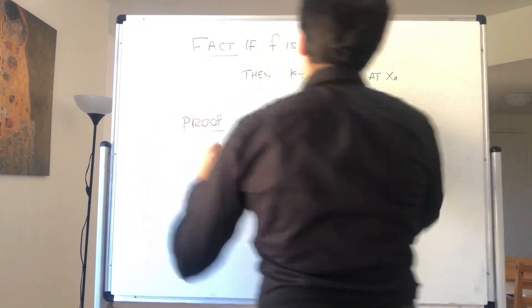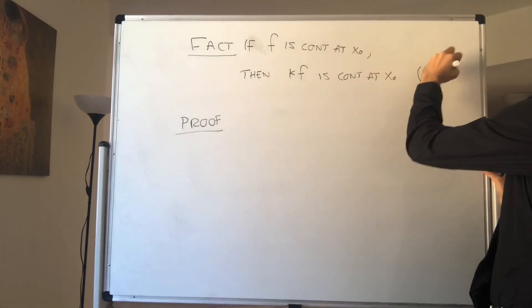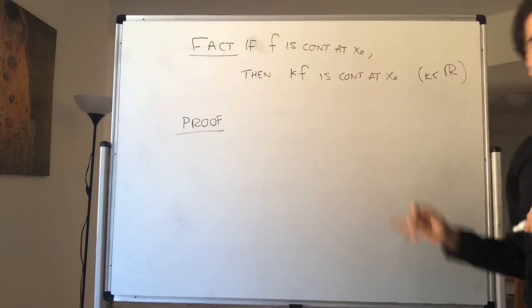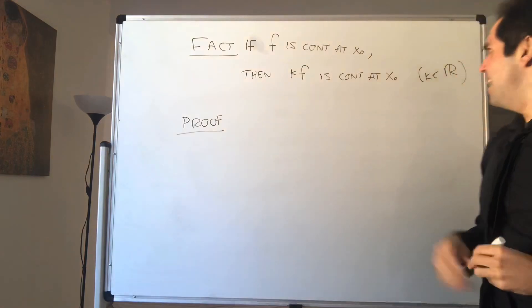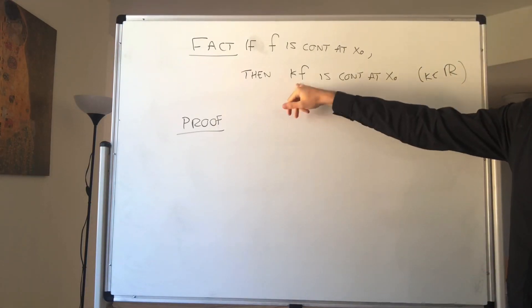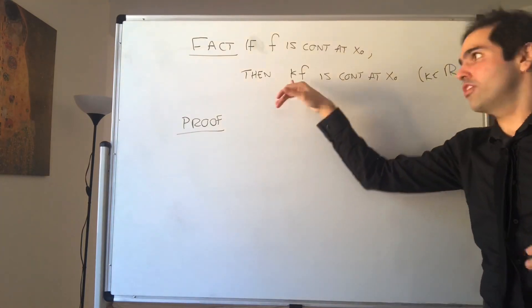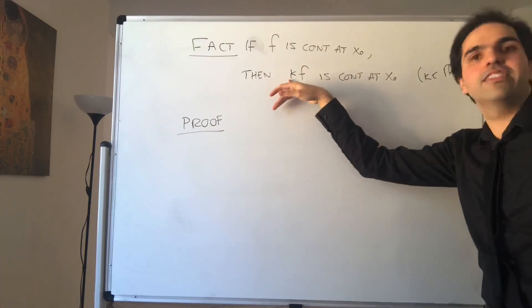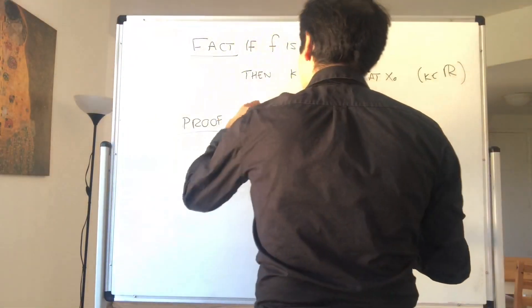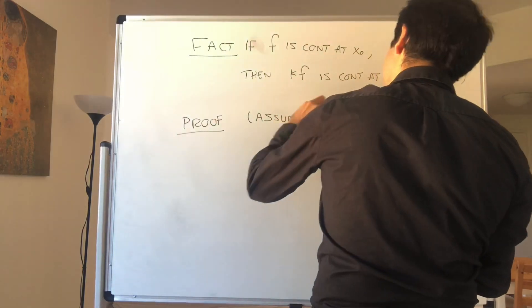First, if k is zero — and k is a real number here — we're done, because the zero function is continuous. So we can assume k is non-zero.